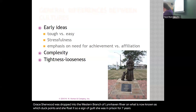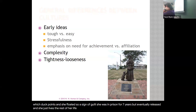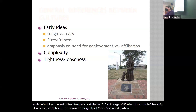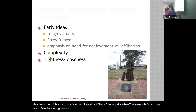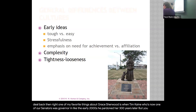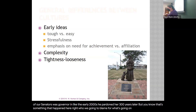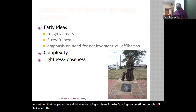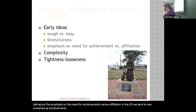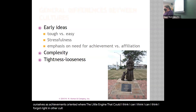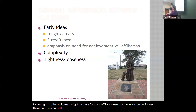Sometimes people talk about the emphasis on the need for achievement versus affiliation. In the U.S. we tend to see ourselves as achievement-oriented — the little engine that could. In other cultures it might be more focused on affiliation, needs for love and belongingness. There's no clear causality in terms of which cultures are which. Another dimension is complexity, which is problematic — the idea of modern versus 'simple' cultures is ethnocentric. Who gets to decide if a culture is simple? Indigenous people in North America might be labeled simple but had complex systems: families, chiefs, alliances, various religions, and different groups interacting in different ways.